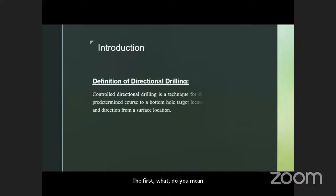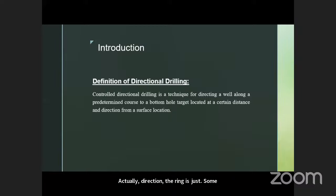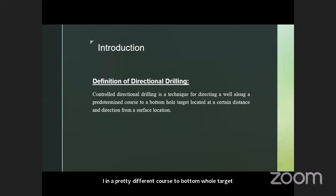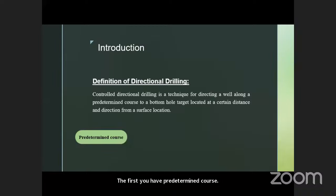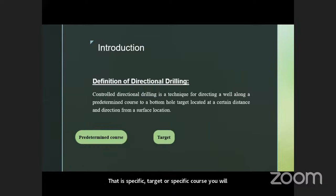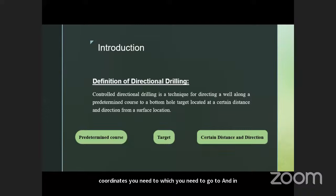What do we mean by directional drilling? Directional drilling is drilling where you control the wellbore to get a specific direction along a pre-determined course to a bottom hole target located at a certain distance and direction from the surface location. The three main things for directional drilling are: a predetermined course or specific target you want to reach, the target coordinates you need to go to, and a certain distance and direction.